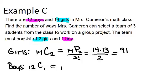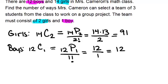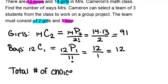For the boys, we'll have 12C1, which is 12P1 over 1 factorial. 12P1 is just 12 and 1 factorial is just 1, so our answer is 12. There are only 12 ways to choose one boy, which makes sense because there are 12 boys. So to find our final answer, we multiply these two together: 91 times 12, which is 1,092.